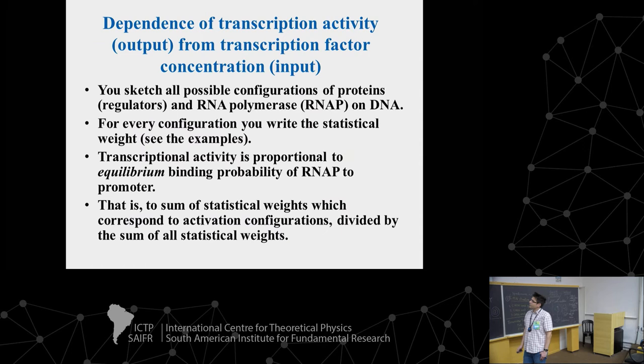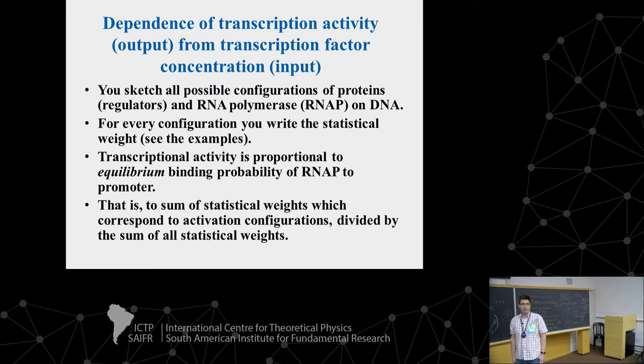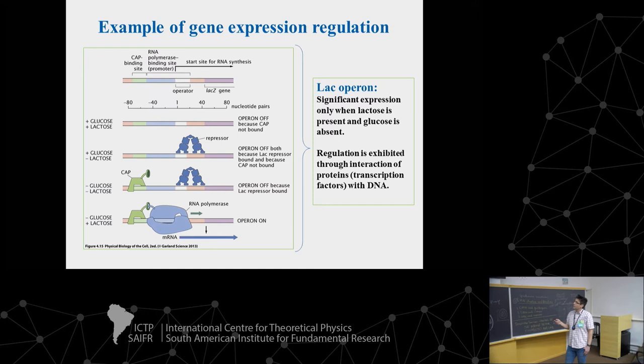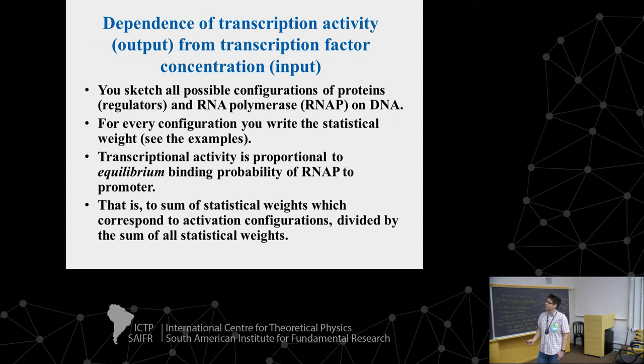This is the first step. For every configuration, you write the appropriate statistical weight, which is proportional to the probability that this configuration will be realized. By convention, the statistical weight of the empty promoter — DNA without any proteins bound — is equal to one. All other statistical weights are normalized with respect to the empty promoter.